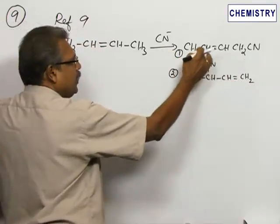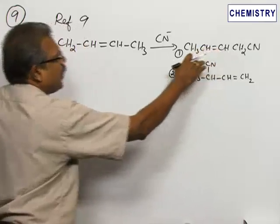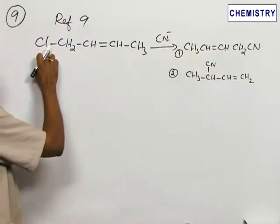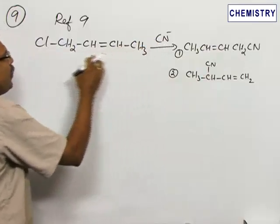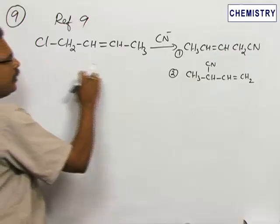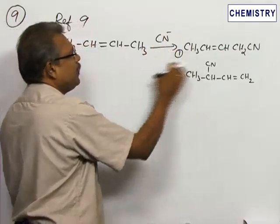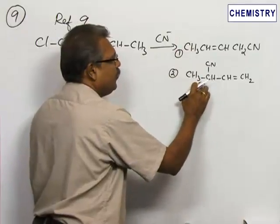What may be the reason for that? In the formation of the first product, CN- replaces the Cl-. So there is a normal pathway where CN- attacks carbon number one. At the same time, CN- can attack carbon number three also. That is the reason we get another product.